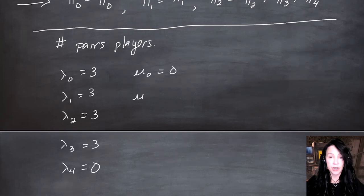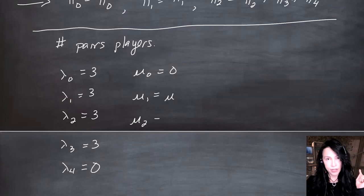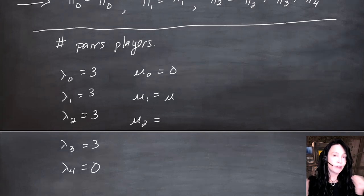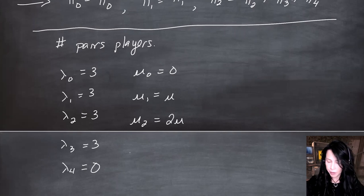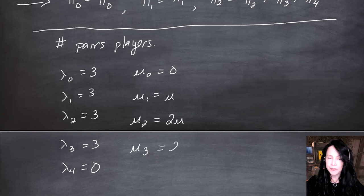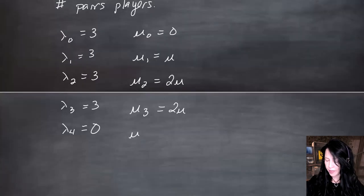If there's one pair, they finish after an exponential time with rate mu. With two pairs, the next departure is the minimum of two IID exponentials with rate mu, giving rate 2mu. When there are three pairs, only two are actually playing — the third is on the bench — so the departure rate is still 2mu. Same when there are four pairs. Every mu in this problem is one.